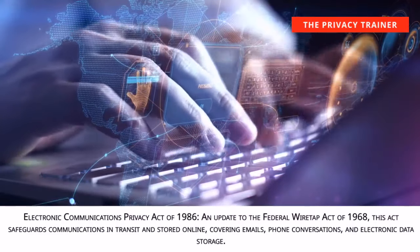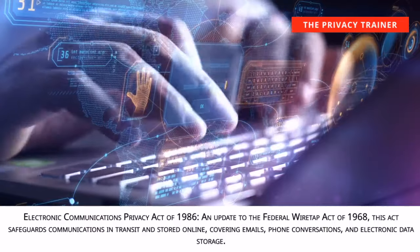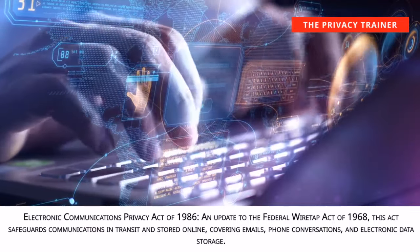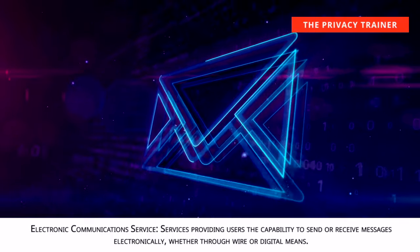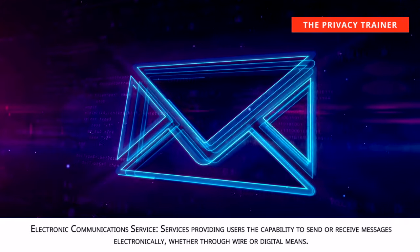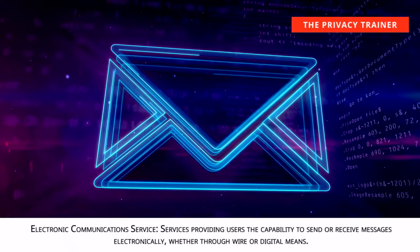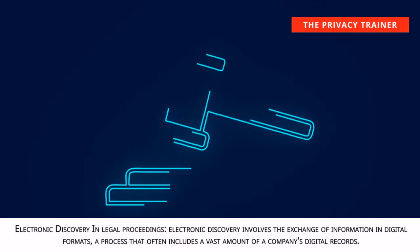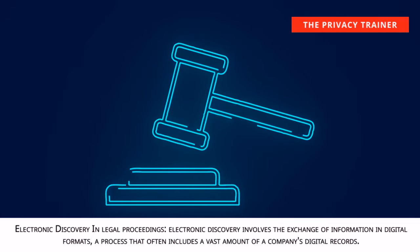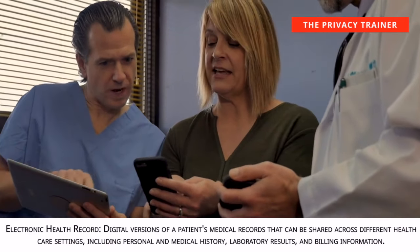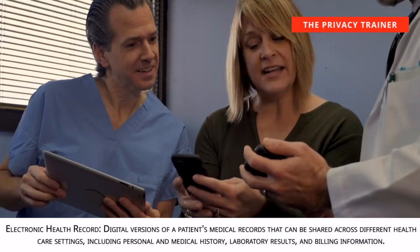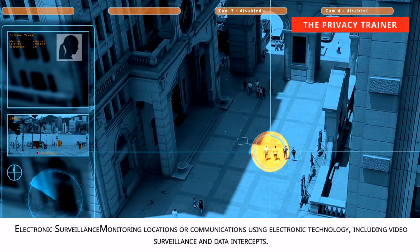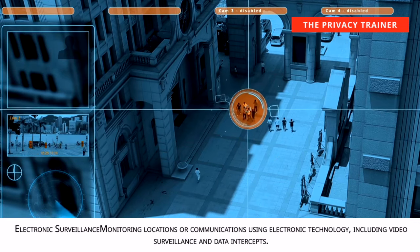Electronic Communications Privacy Act of 1986. An update to the Federal Wiretap Act of 1968, this act safeguards communications in transit and stored online, covering emails, phone conversations, and electronic data storage. Electronic communications service. Services providing users the capability to send or receive messages electronically, whether through wire or digital means. Electronic discovery. Involves the exchange of information in digital formats, a process that often includes a vast amount of a company's digital records. Electronic health record. Digital versions of a patient's medical records that can be shared across different healthcare settings, including personal and medical history, laboratory results, and billing information. Electronic surveillance. Monitoring locations or communications using electronic technology, including video surveillance and data intercepts.